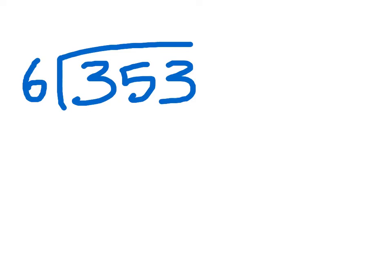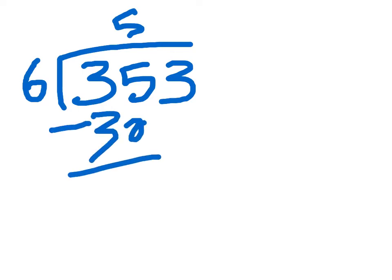This is how to take 353 divided by 6. 6 goes into 35, 5 times — that's minus 30, equals 5. Bring down 3.